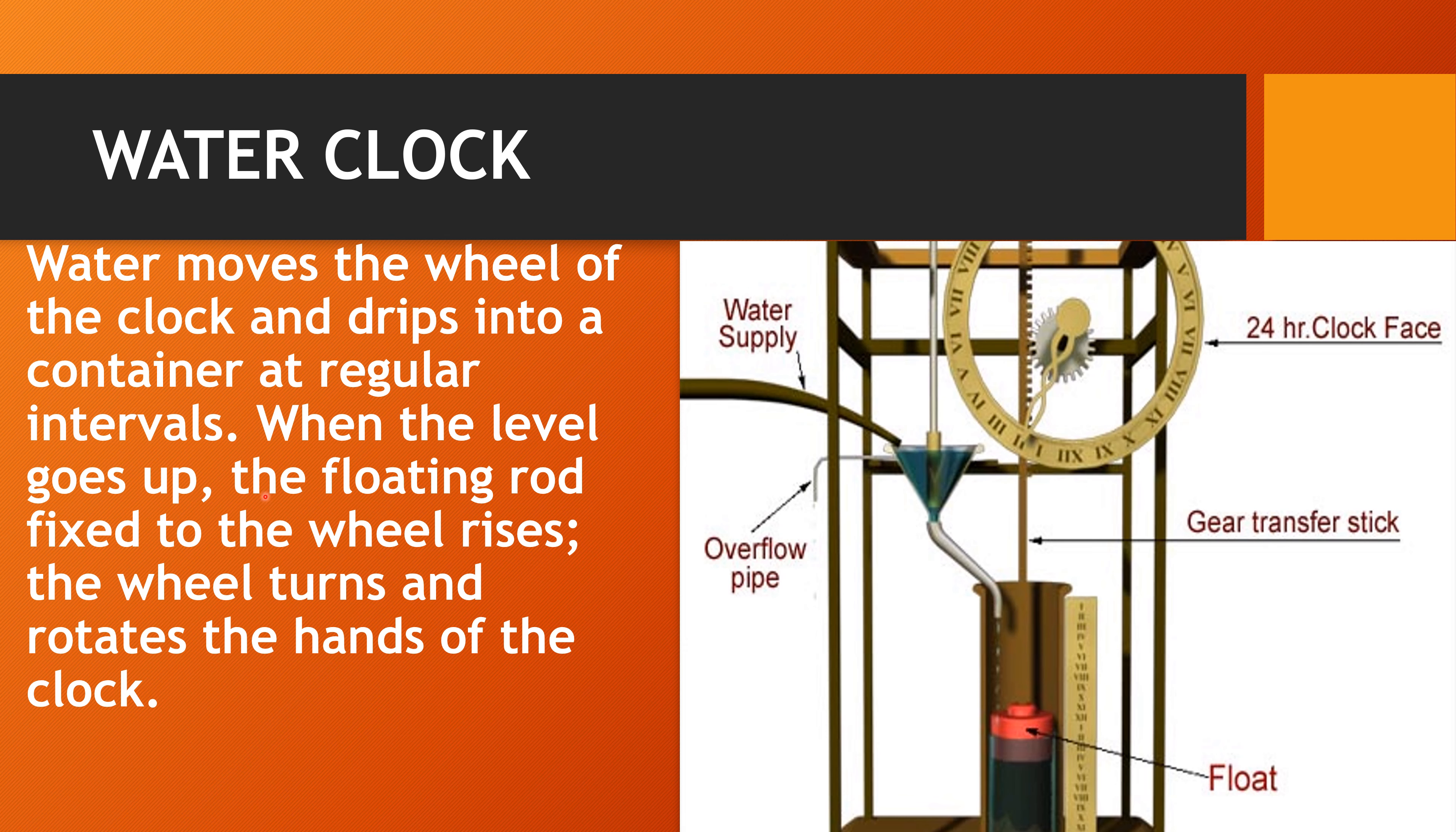When the level goes up, the floating rod fixed to the wheel rises. So when the level rises, this is the floating rod and it rises. When it rises, the wheel turns through this gear transfer stick. And because of this gear transfer stick, it changes the hands of the clock. And this way we get the time.